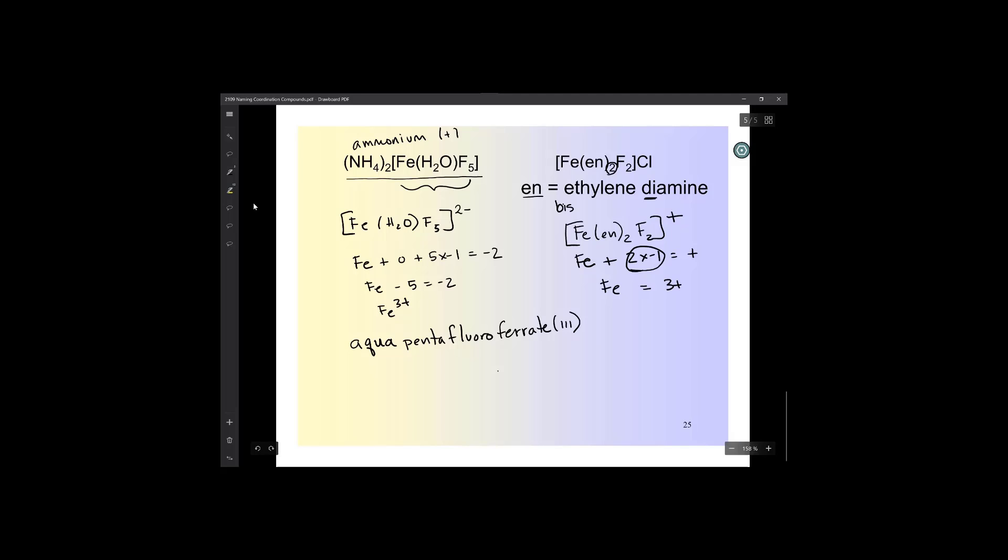So now we can name the complex ion. We have to name the ligands in alphabetical order. Ethylenediamine comes before fluoro. So what we're going to do, because E comes before F, we're going to write bis(ethylenediamine) difluoro. So that takes care of my ligands.